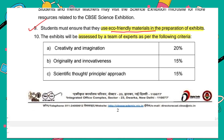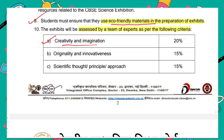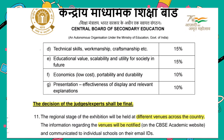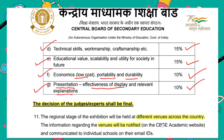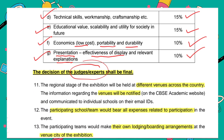Now let's see the criteria for assessment. Creativity and imagination carries 20% weightage. Originality and innovativeness carries 15%. Scientific thought, principle or approach behind it carries 15%. Technical skill, workmanship and craftsmanship has 15% weightage. Educational value, scalability and utility for society has 15%. Economics — whether it is low cost — portability and durability has 10% weightage. And lastly, your presentation: effectiveness of display and relevant explanation carries 10% weightage. The decision of the judge and experts will be final.